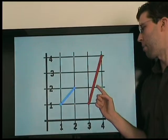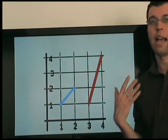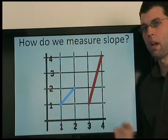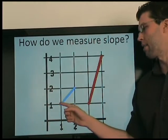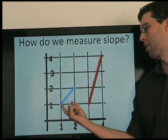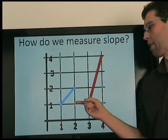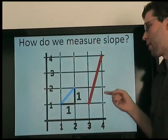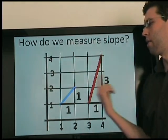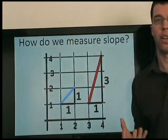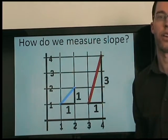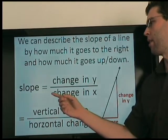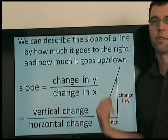Now we know that this line is steeper than this line. The question is, how do we measure slope? How do we use numbers to describe the steepness of lines? Well, if we look at this line, we see that as x increases by 1, y increases by 1. Here, as x increases by 1, y increases by 3. So the difference is how much y is changing compared to how much x is changing. And that, in fact, is the definition of slope. Slope is the change in y divided by the change in x.